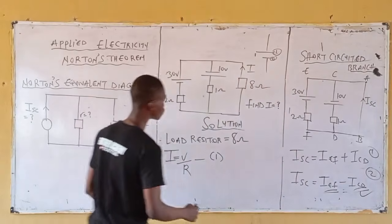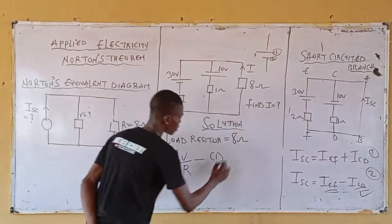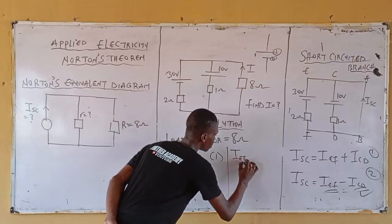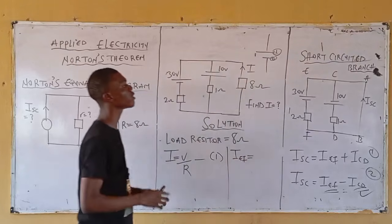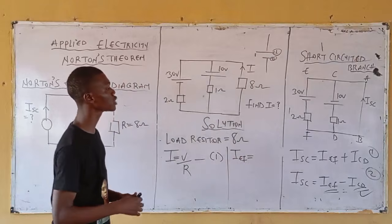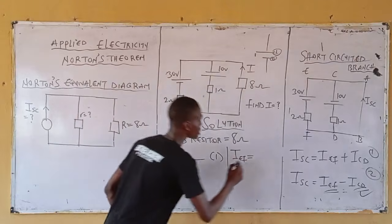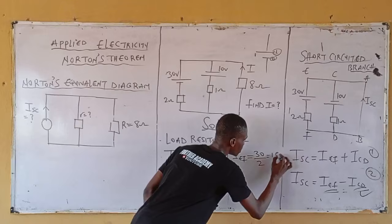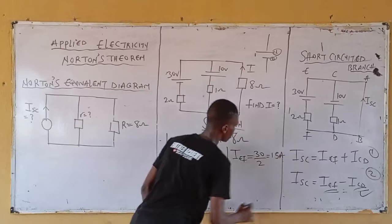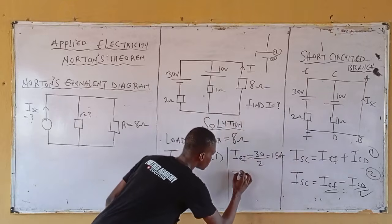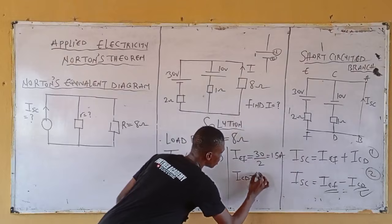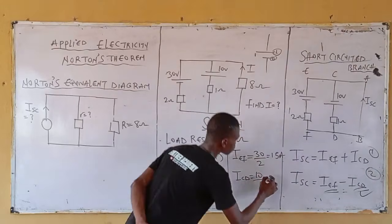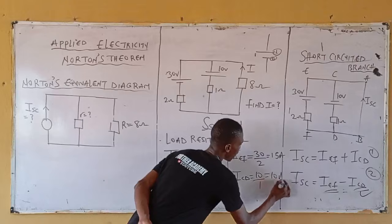Let's apply equation one to branch EF: IEF equals 30 divided by 2, which equals 15 amperes. Now let's solve for ICD: 10 divided by 1, which equals 10 amperes.